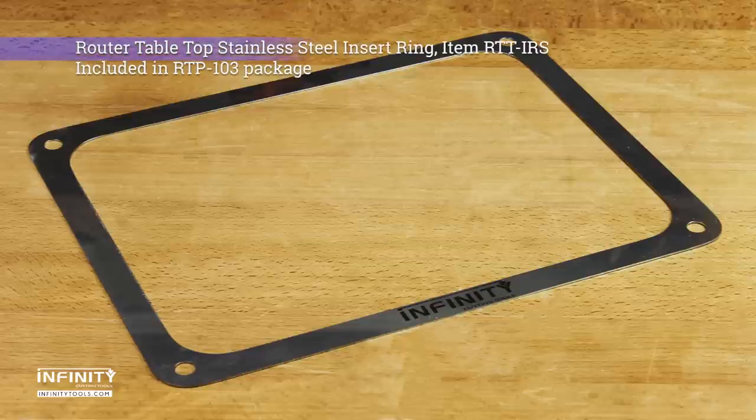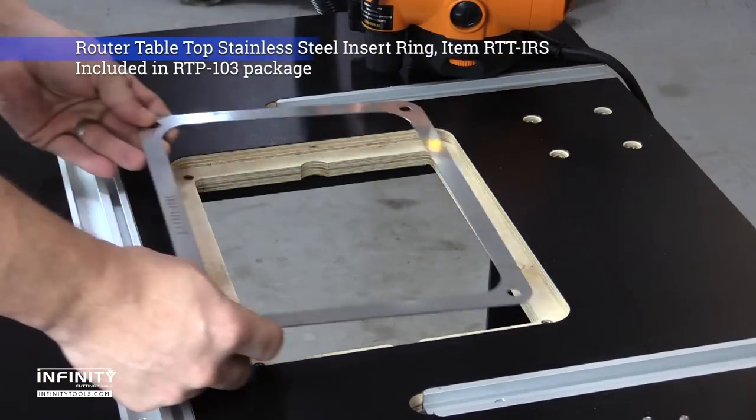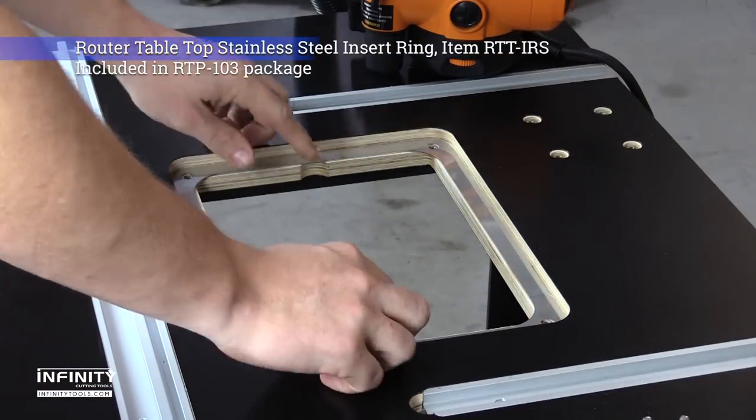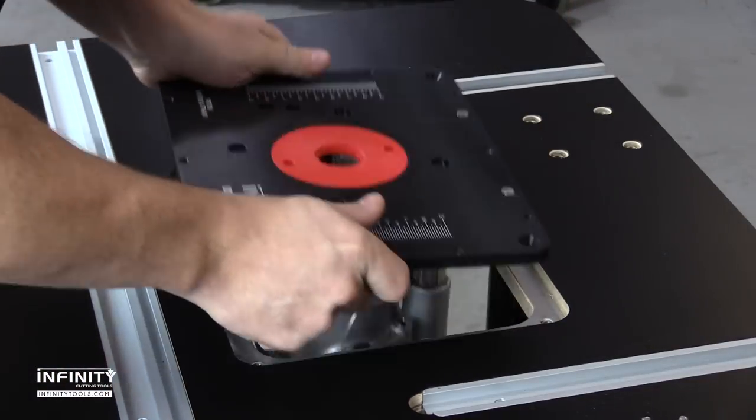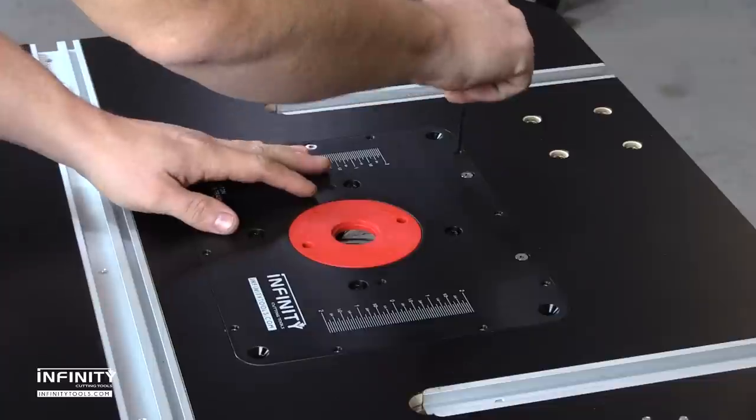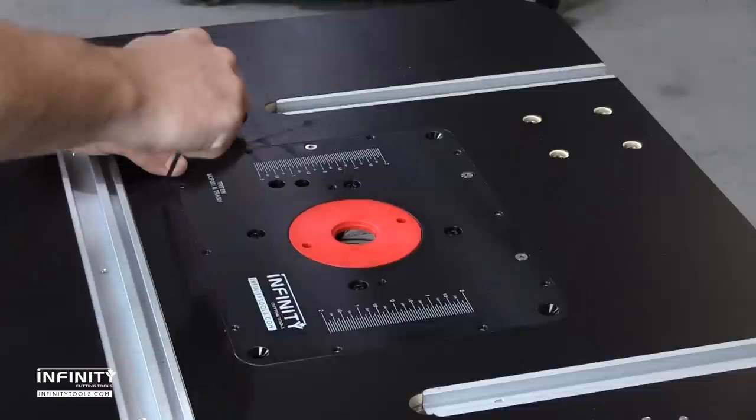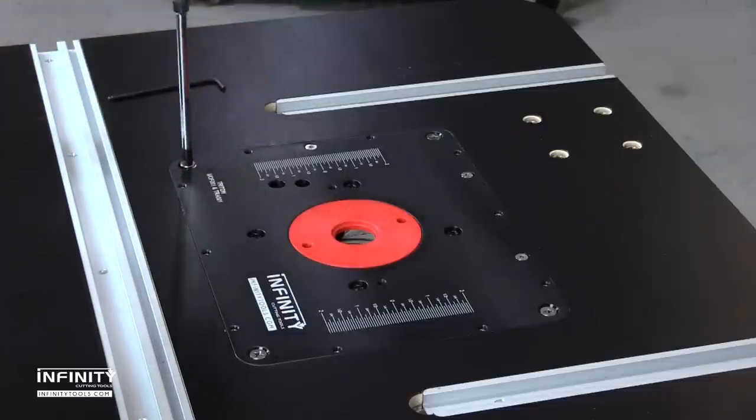The Infinity Stainless Steel Insert Ring is laser-cut and acts as a washer to support the weight of your router. It provides a solid surface for the router leveling set screws to bear against. The ring ensures that once leveled, the router will never need to be readjusted, eliminating a chronic problem with most other router tabletops.